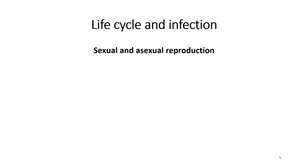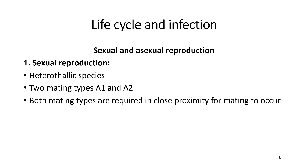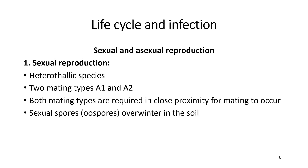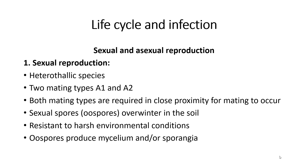It has a unique life cycle that routinely employs both sexual and asexual reproduction for propagation and survival. Sexual reproduction: it is a heterothallic species. The isolates have either A1 or A2 mating types, and both mating types are required in close proximity for mating to occur. Sexual spores, known as oospores, can live in the soil for years as they are resistant to harsh environmental conditions. Oospores produce mycelium and/or sporangia.